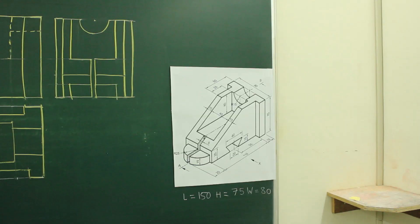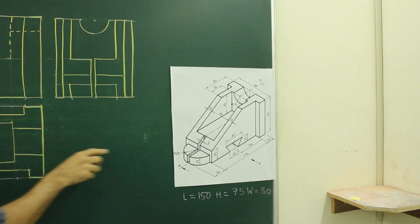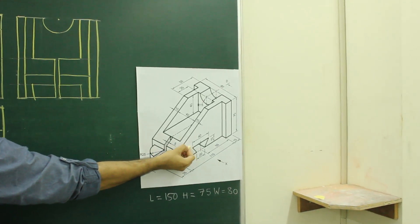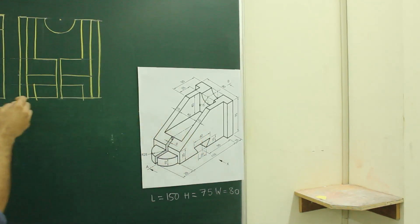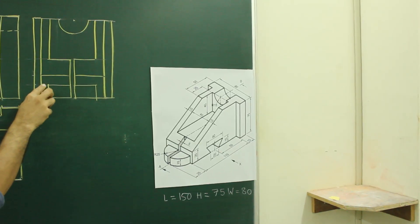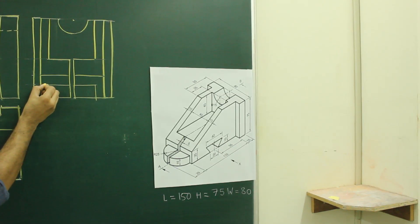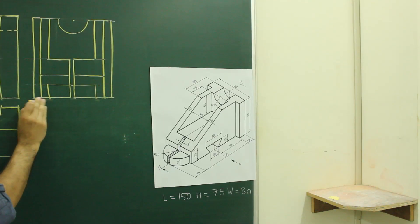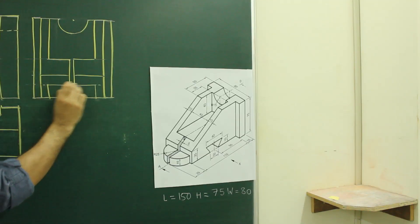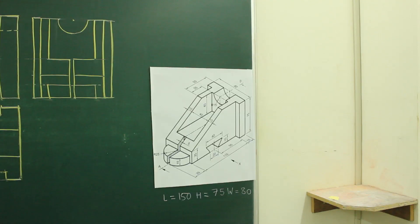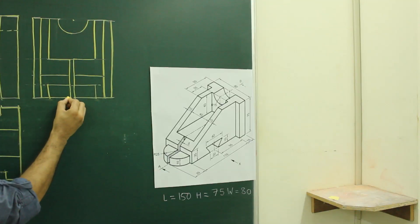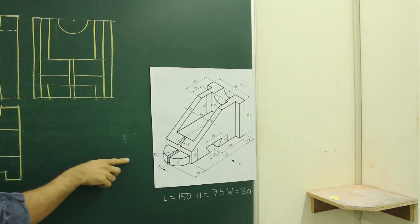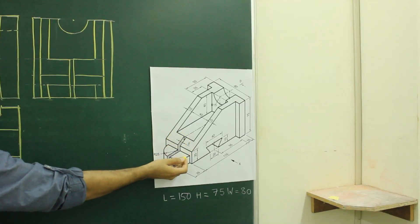Now after that, when you see from the side, there is one more thing: you won't be able to see this dovetail slot which is going through and through, so we need to draw dotted lines for that. The dotted will appear in this portion — three dots — because it is overlapping with the dark line, so we are not able to see a continuous dotted line. This portion will be dark and this portion will be dark, because when you see from here you can see this line both at the top and at the bottom, so these two lines will be dark.